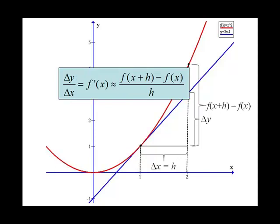Dividing both of those by delta x, or h, what we get is that delta y over delta x — which is our derivative at one — is approximately equal to the difference quotient.